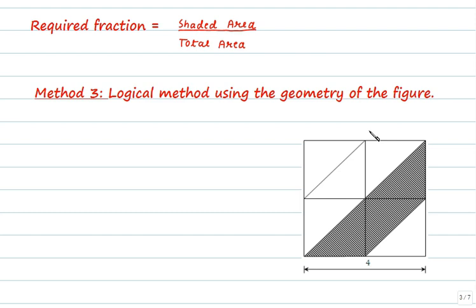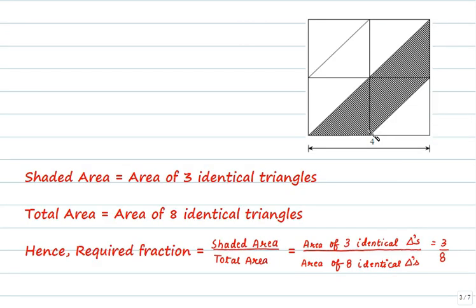Logically also we can say that the figure is perfectly symmetrical and hence the triangles are identical. Now shaded area is composed of 3 smaller triangles and total area is composed of 8 such identical triangles. Therefore the required fraction that is shaded area divided by the total area must be equal to 3/8.